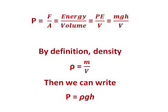Now PE can be written as MGH, giving us MGH divided by volume. And M divided by volume is defined as density, or rho. So now we get pressure equals rho GH, where G is the gravitational constant and H is the height of the water.